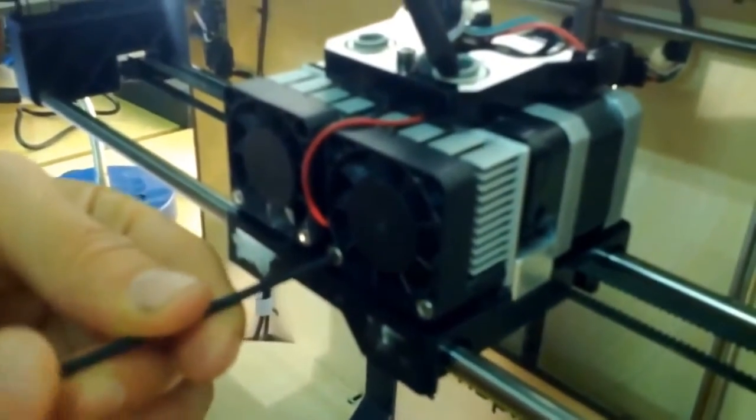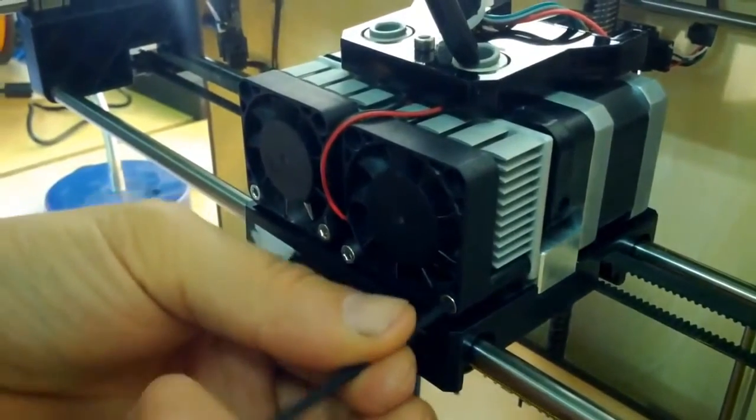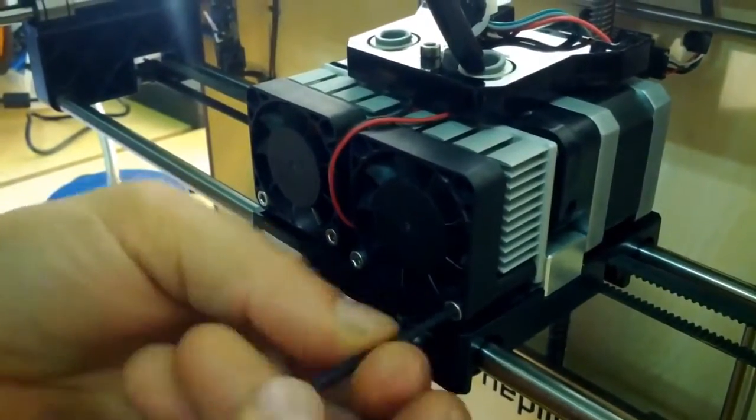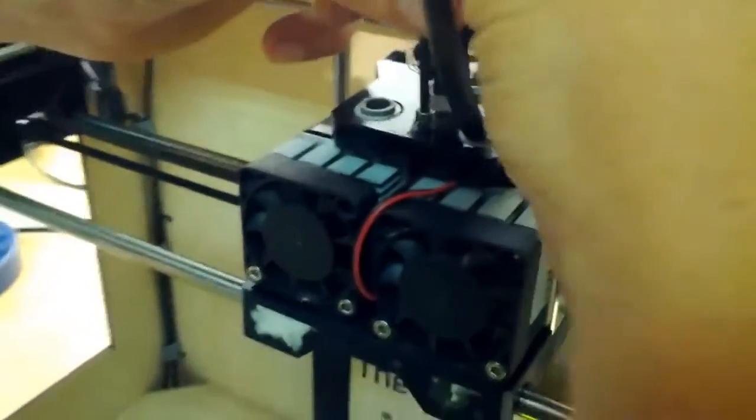Using the hex wrench, we're going to remove the two bolts that hold the fan onto the front of the extruder assembly. And we're going to loosen the two bolts that secure the plate on top of the extruder.